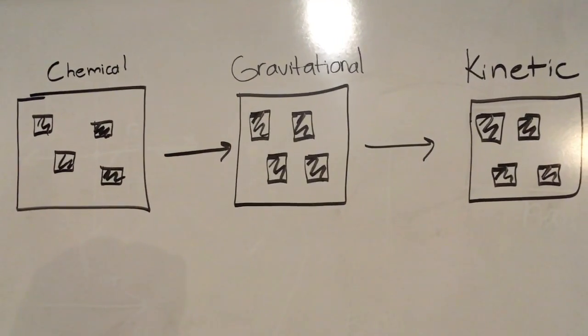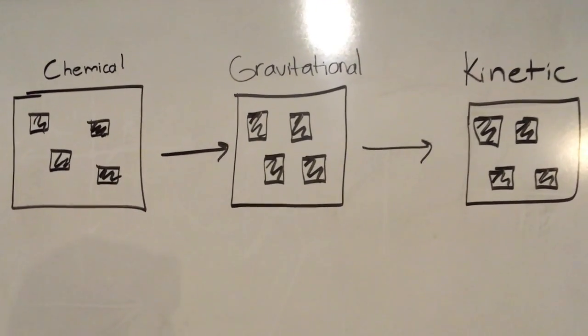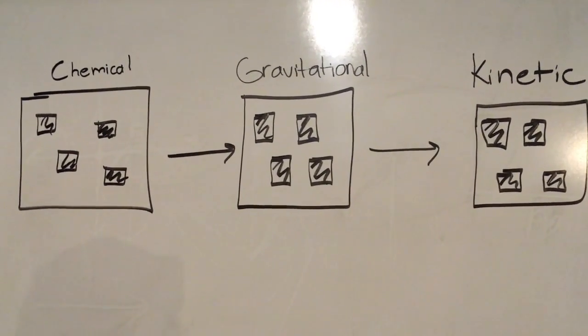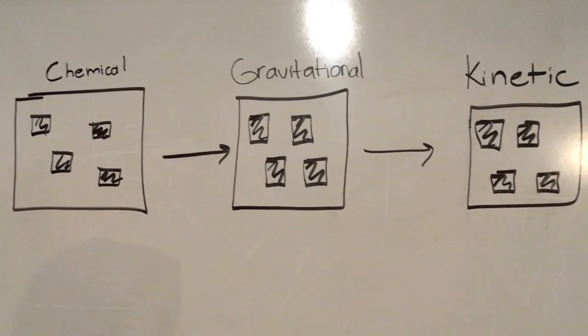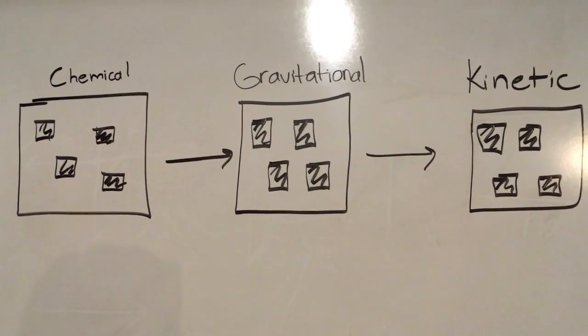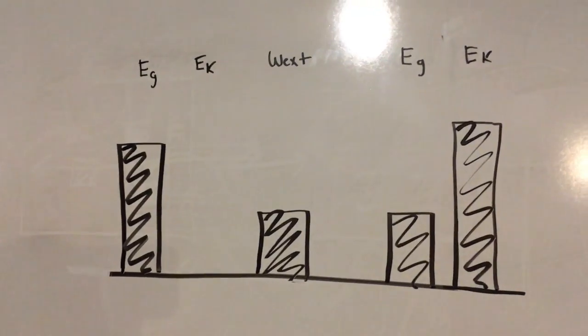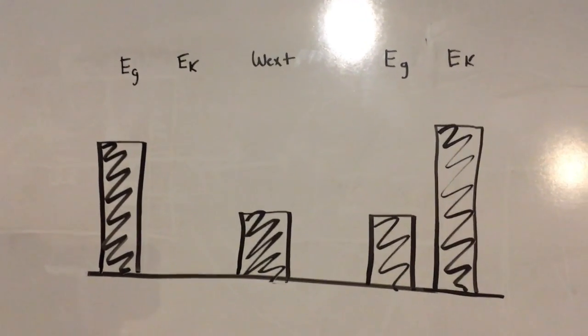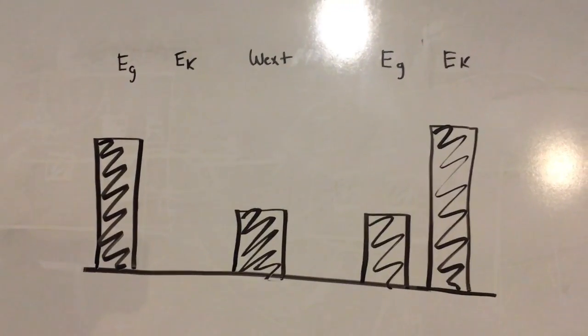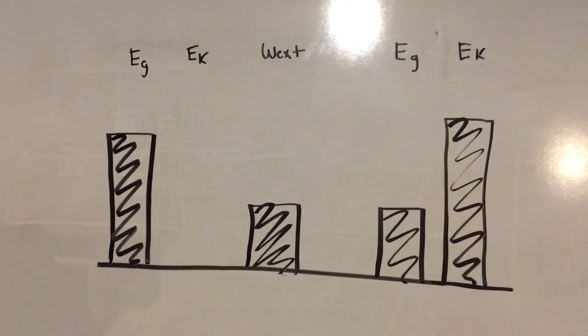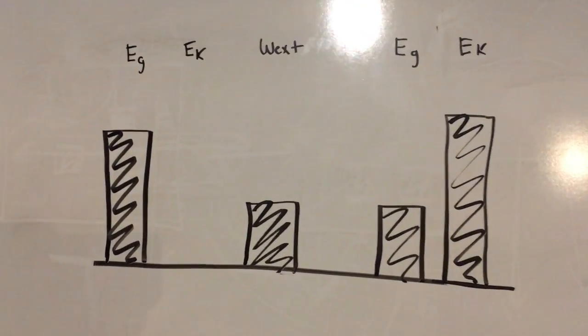For energy in this case, the stored energy flows from chemical to gravitational and kinetic. Let's say in this situation the ball goes from all the way up at the top at rest to halfway down.